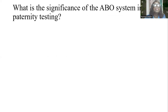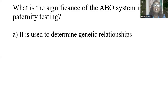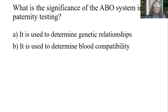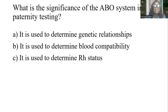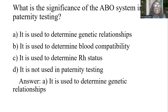What is the significance of the ABO system in paternity testing? A) It is used to determine genetic relationships. B) It is used to determine blood compatibility. C) It is used to determine Rh status. D) It is not used in paternity testing. The answer is A: it is used to determine genetic relationships.